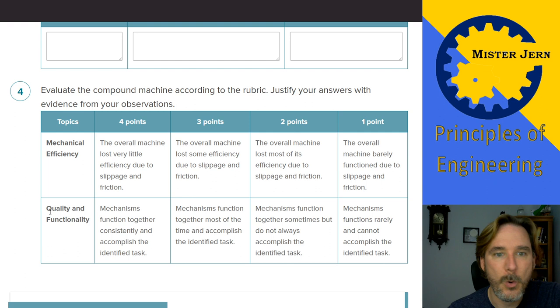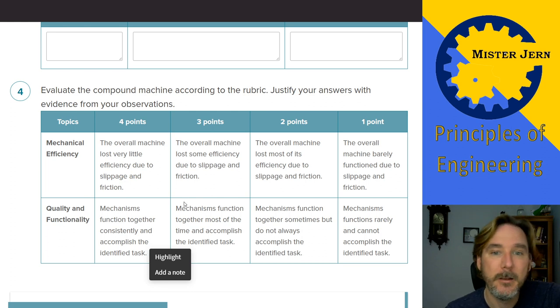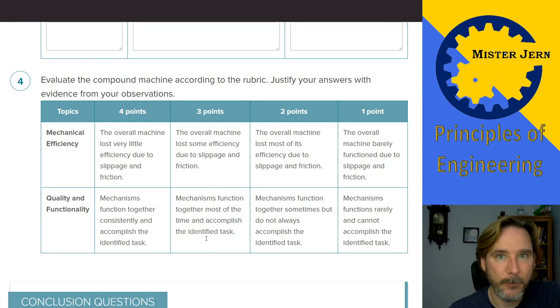Use this rubric to grade or evaluate the mechanical efficiency of that machine that you chose. Then do the same thing for the quality and functionality. Does it get four points? Well, here's what it means to get four points. Does it get four points? You tell me. Okay. In your engineering notebook, justify everything, be as thorough as possible. Okay. That's step four.